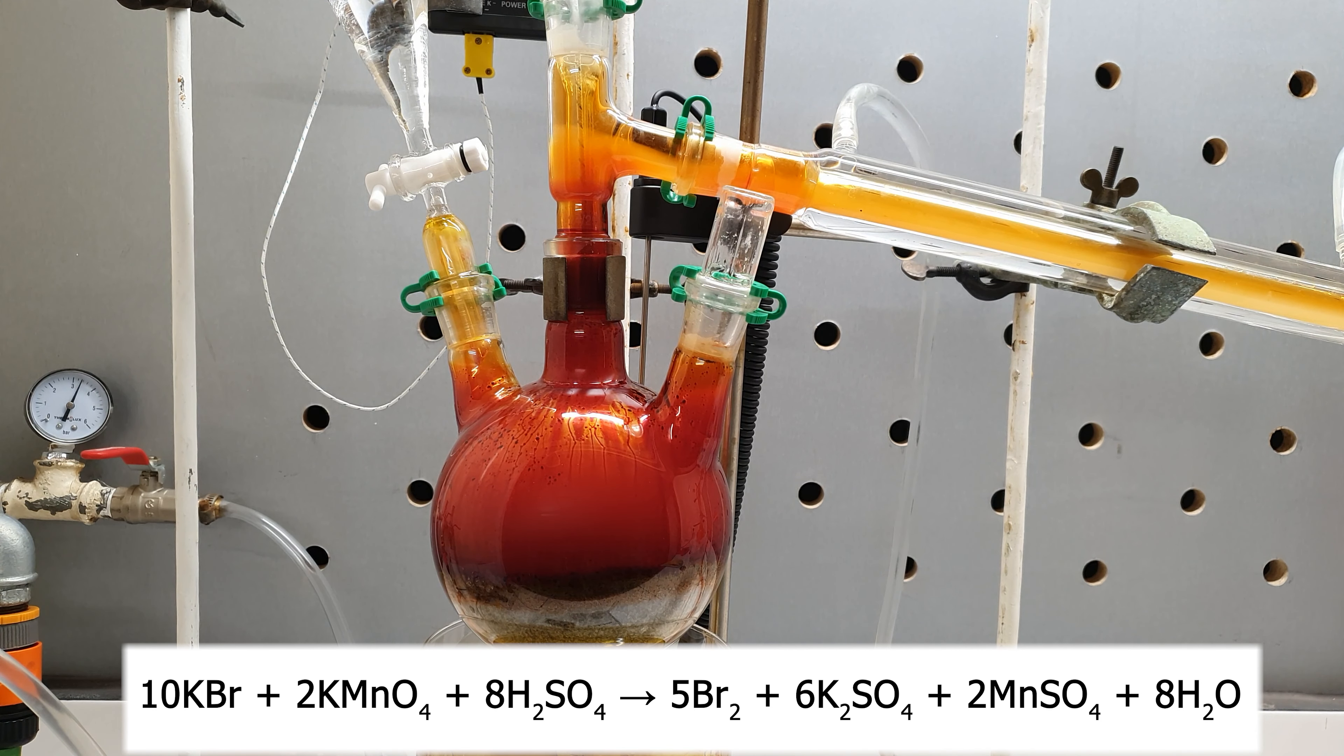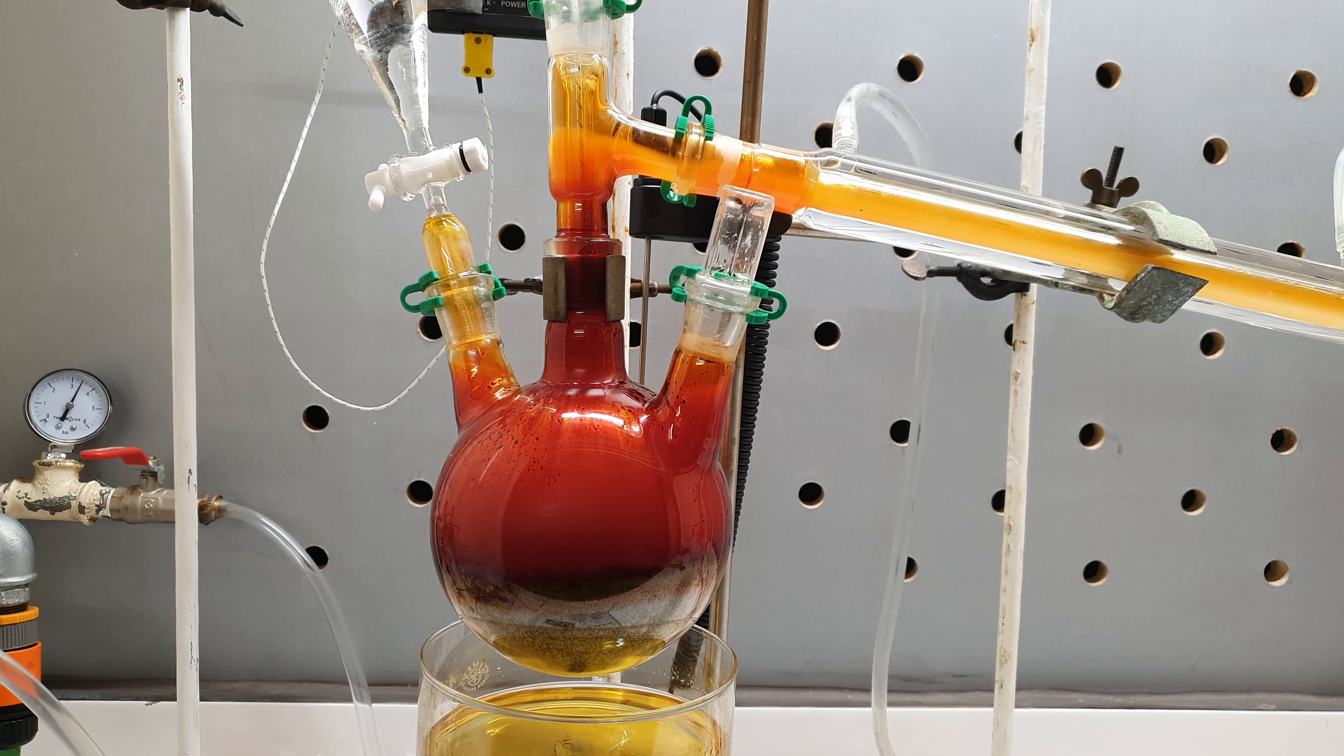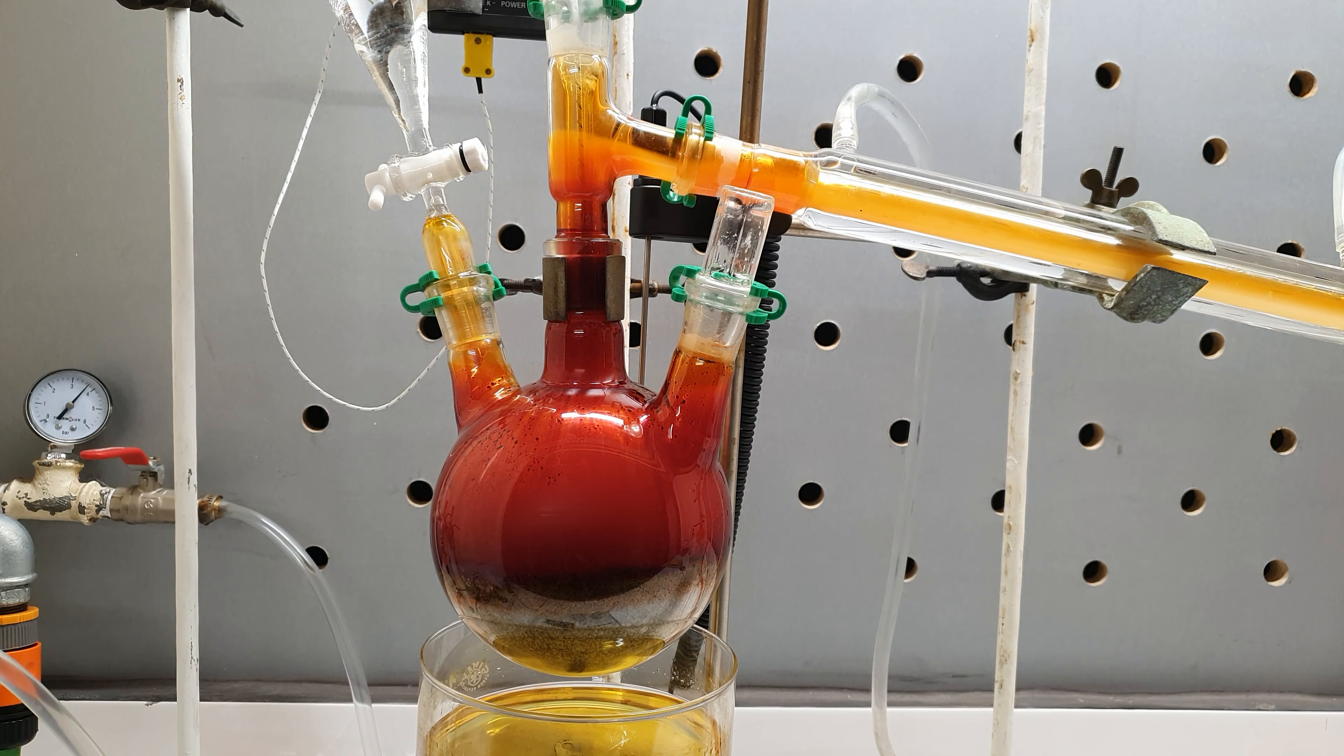However, even after I had added quite a big amount of acid, no bromine distilled over. At this point, I realized that since there was no water present in the flask, the major reaction happening was between sulfuric acid and the bromide. This resulted in some oxidation of the bromide. However, most of the time it was just converting it to hydrogen bromide gas. And since we had no water in the flask to dissolve it, it was just escaping through the apparatus without being oxidized.